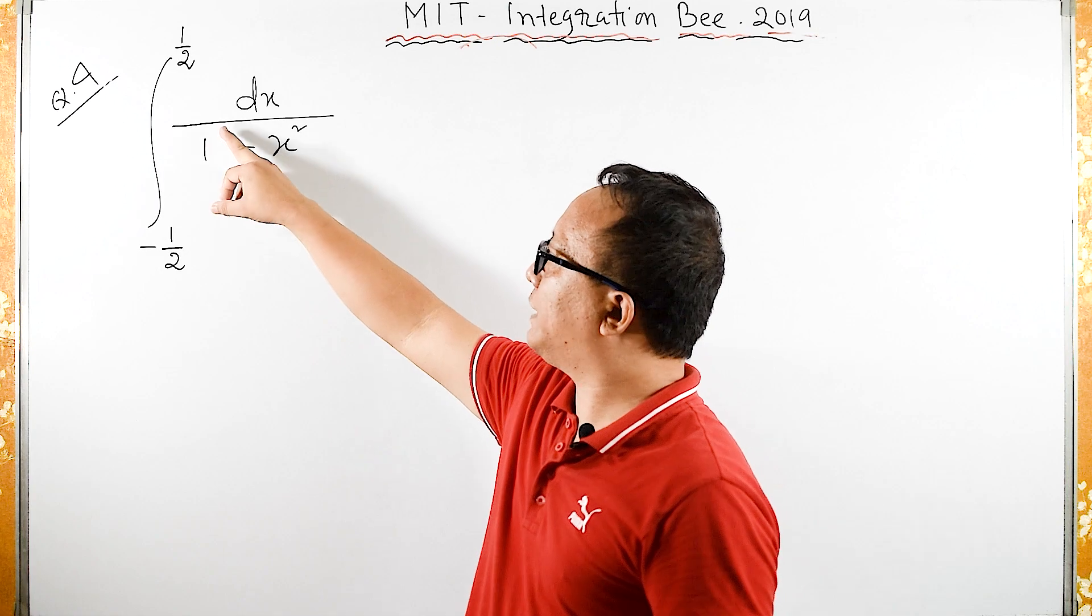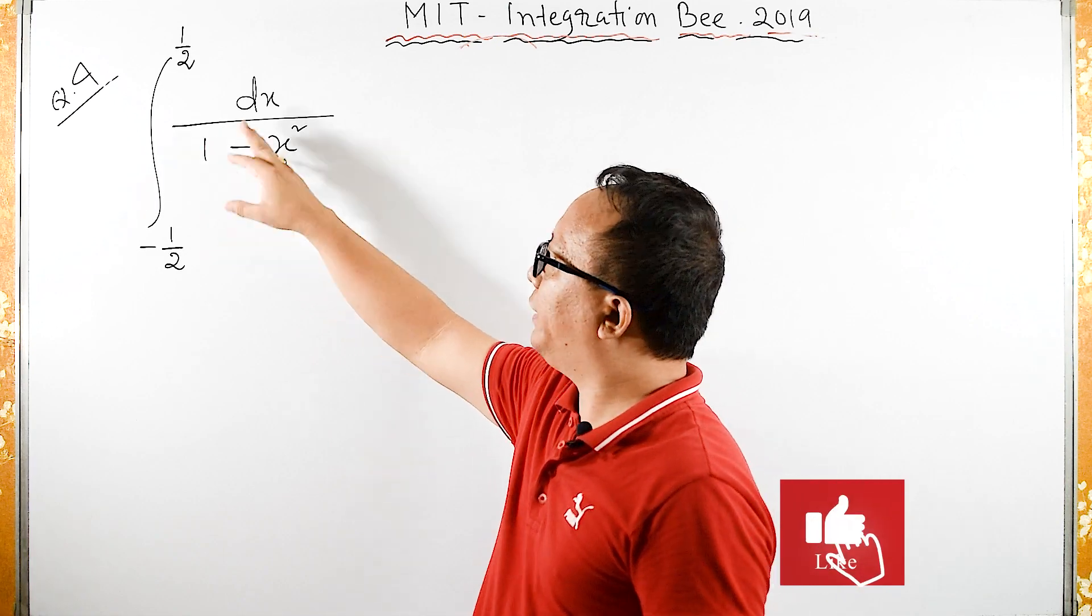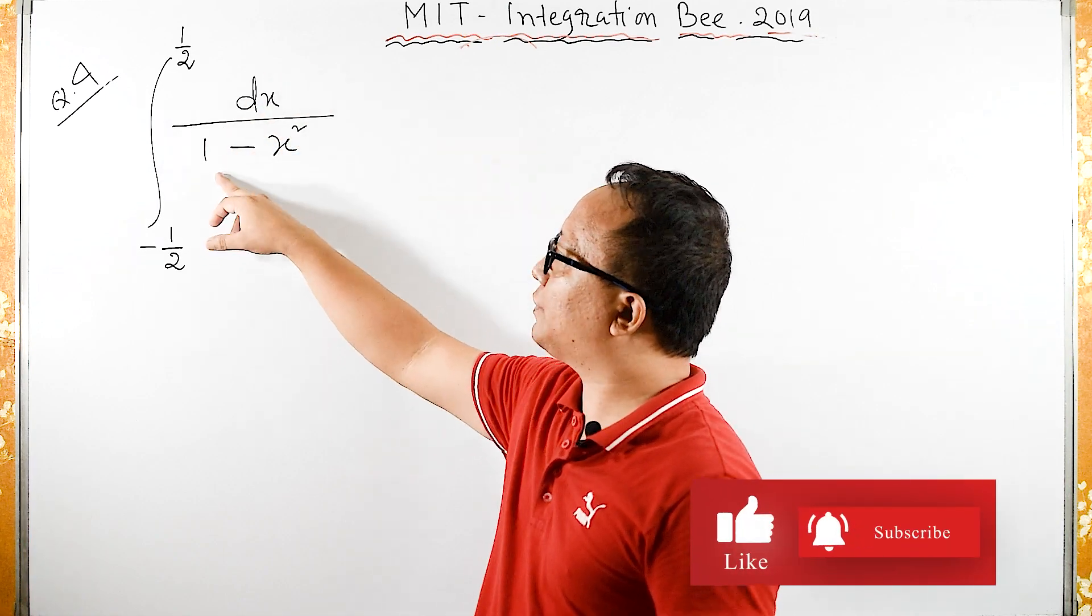Since we have 1 over here, 1 is same as 1 square. So we have integral dx upon a square minus x square.